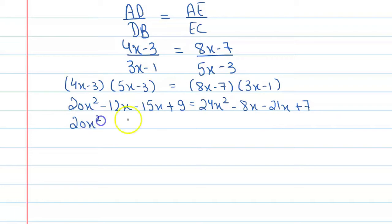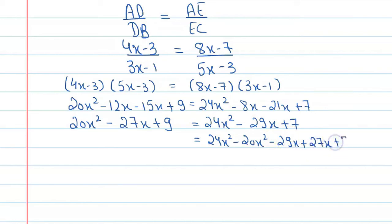Alright, so this is what we get. So again, this is 20x square minus 27x plus 9, here we will get 24x square minus 29x plus 7. Taking all these terms to the left-hand side, we get 24x square minus 20x square minus 29x plus 27x plus 7 minus 9 equals 0. Now 0 equals, this is 4x square, here you will get minus 2x, and after that here you will get minus 2.